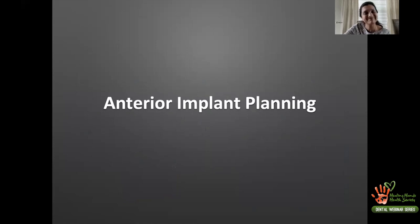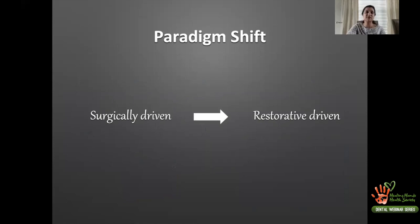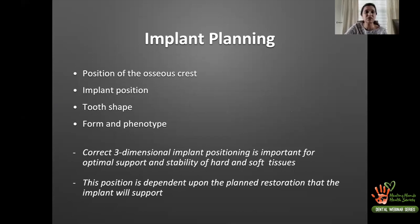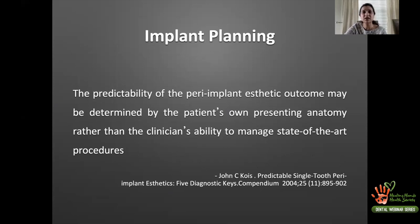Correct three-dimensional implant positioning is important for optimal support and stability of hard and soft tissue, and this position is dependent upon the planned restoration that the implant will support. As John Kois stated profoundly: the predictability of the peri-implant aesthetic outcome may be determined by the patient's own presenting anatomy rather than the clinician's ability to manage state-of-the-art procedures. You may be excellent at your work, but the ultimate outcome is largely dependent on what the patient presents with.